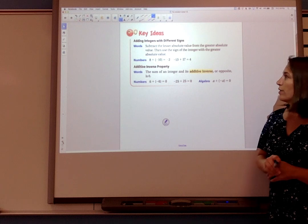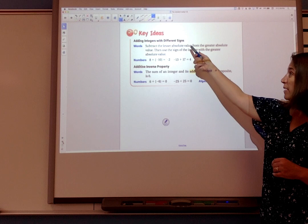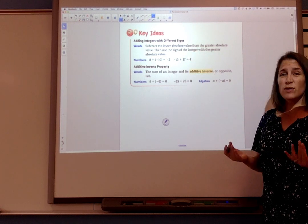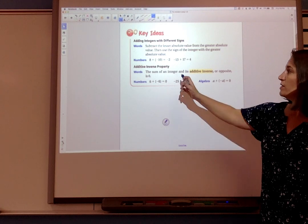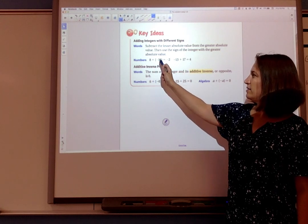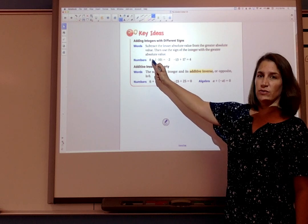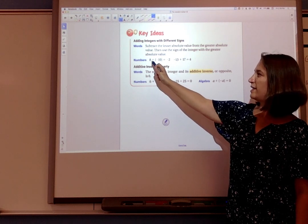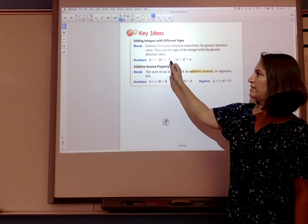In my words, I would say you would subtract the lesser or the smaller absolute value from the greater absolute value and then use the sign of the integer with the greater absolute value. So here if I'm adding 8 + (-10), I'm going to take their absolute values 8 and 10. Subtract the smaller one. So 10 - 8 is 2 and the larger absolute value was 10.